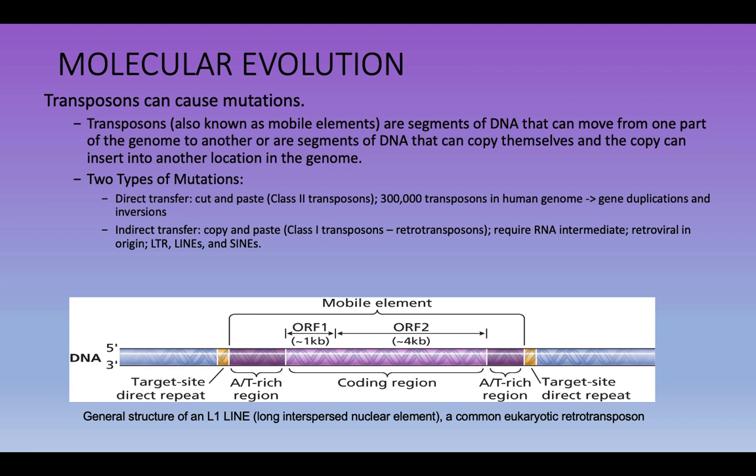This brings us to transposons and mobile elements — segments of DNA that can move around the genome, making copies and inserting themselves in various locations. This connects back to the distinction between vertical gene transfer — typical reproduction, sexual or asexual — and horizontal gene transfer, where DNA is transferred from one organism to another not through reproduction. There are two broad classes of transposons: Class II DNA transposons, which function by a cut-and-paste process, and Class I retrotransposons, which function through a copy-and-paste process. Both can lead to duplications, inversions, and disruptions of normal gene function.